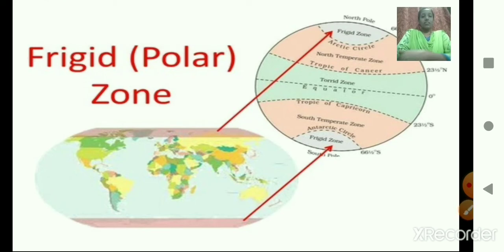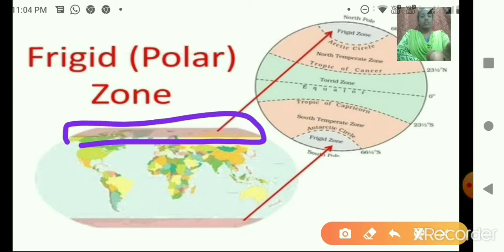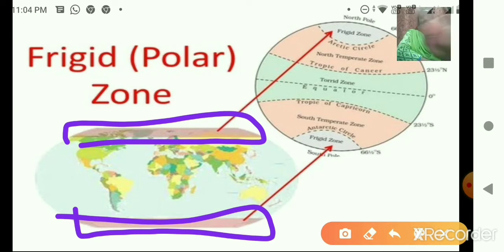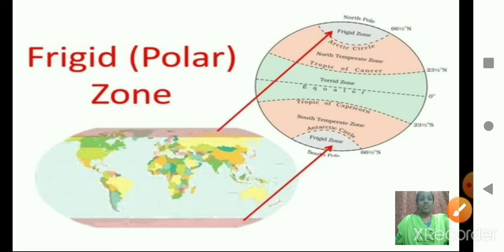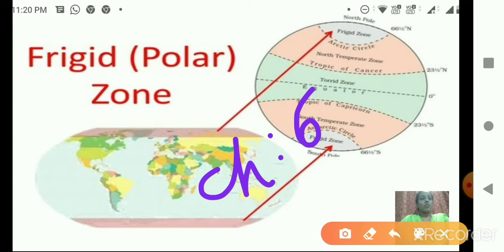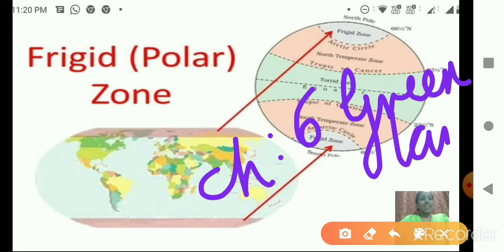Now this highlighted portion — which zone is it? It is the frigid zone, also called the polar zone. Just recall and tell me: from this zone, about which country did we study? In Chapter 6, we studied about Greenland, which lies in the frigid zone. You people are very smart!